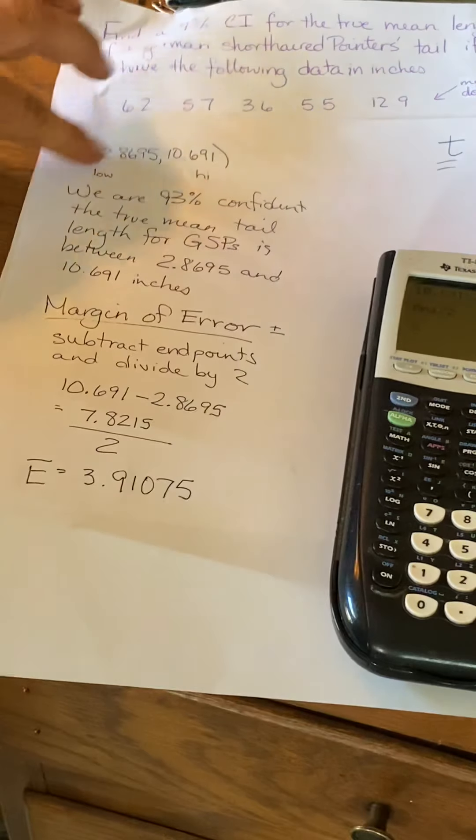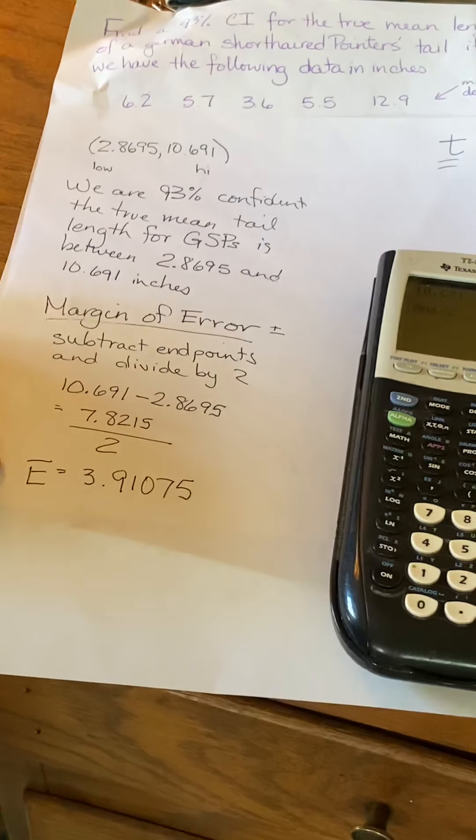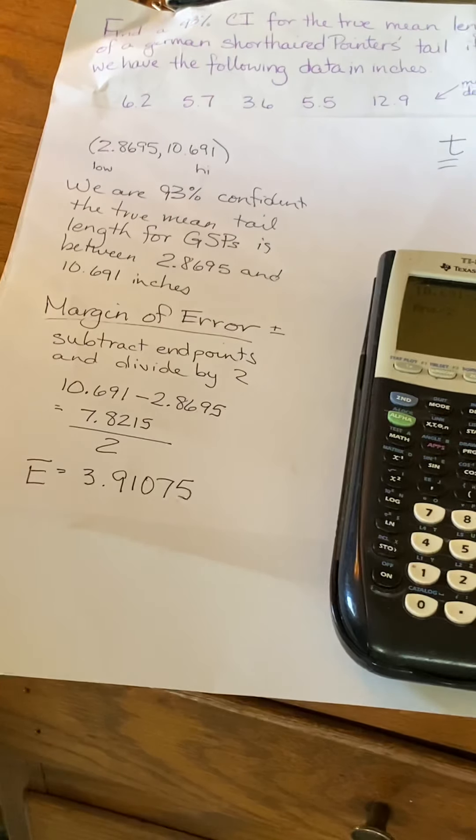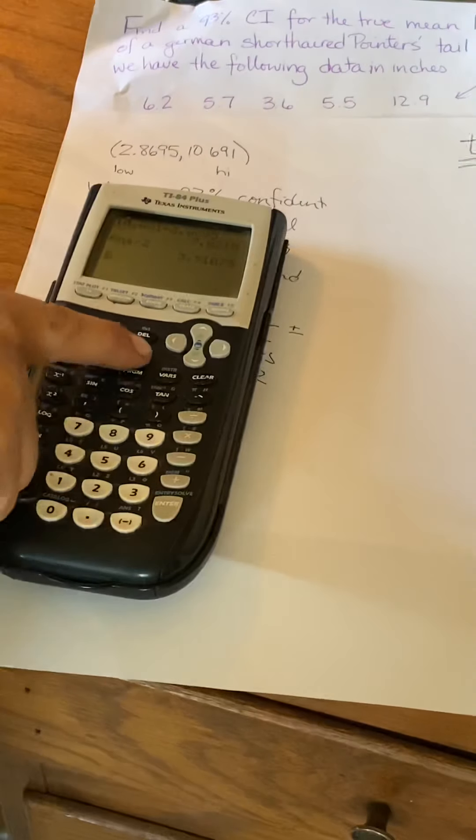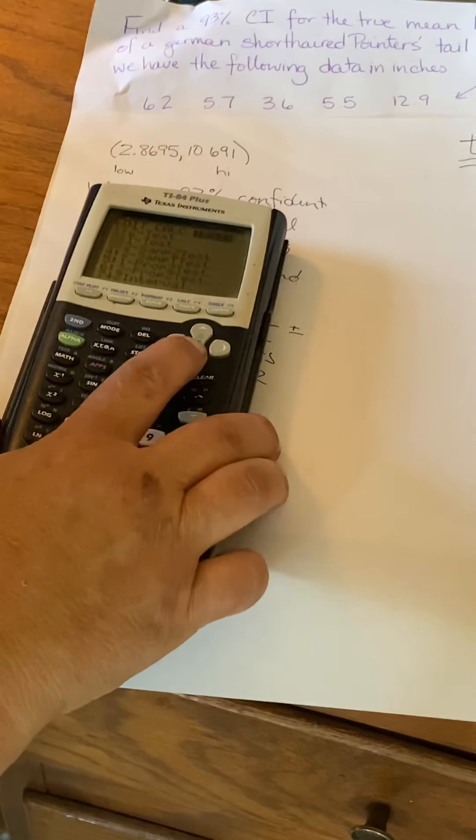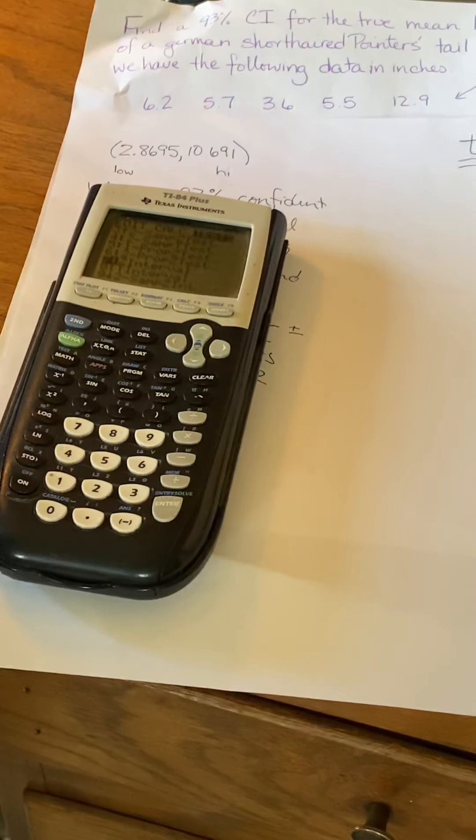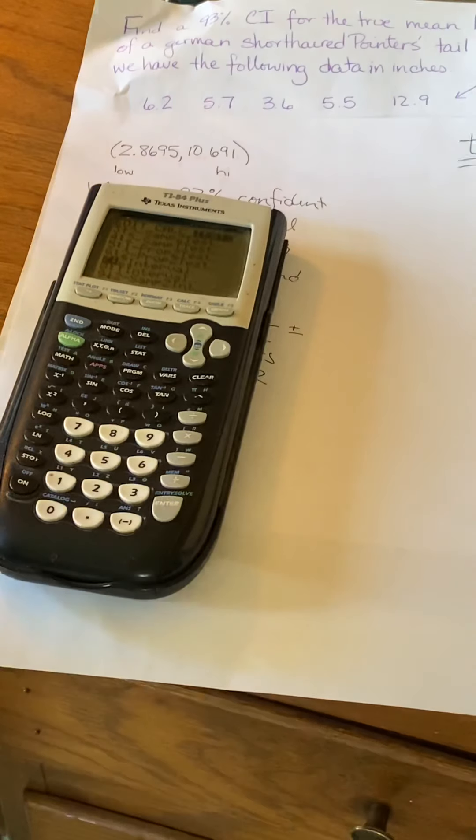So now we have our interval, we have our sentence, and we also have our margin of error. So we have all of the things that we did when we were doing this by hand. We have them, and the calculator did most of the work for us. It was truly just the margin of error that we had to do a little bit of work to find ourselves. So remember, you can go back and watch this again to see where you go to plug things in. But in general, it's STATS over to TESTS. And then you go down to the ones that say interval. And remember, you need to decide whether it's going to be a Z or a T. If there were more than 30 here, it would be a Z, since there were only 5, then we did a T. All right, sound good? You are ready to use your calculator. Have a good day!